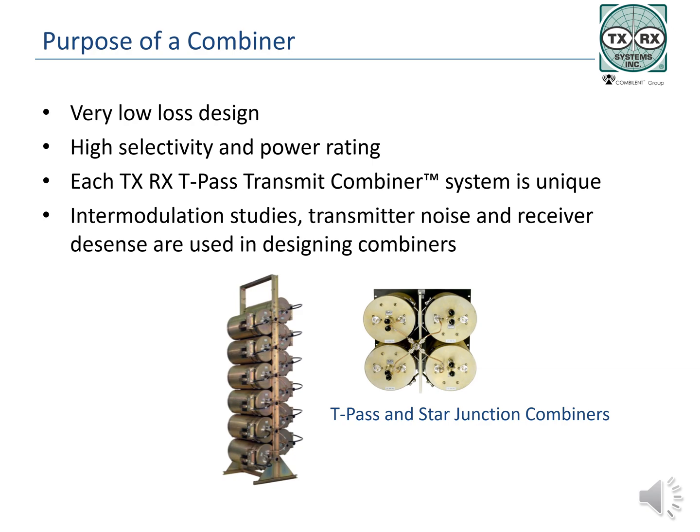All systems are planned based on coverage, which starts with high selectivity and the power output of the transmitters. Low-loss combiners help ensure that coverage is maximized. Combiner selectivity tells us how well the combiner passes signals with minimum loss into other channels. Keeping selectivity high results in more transmitter noise being filtered and a lower risk of interference from outside signals.